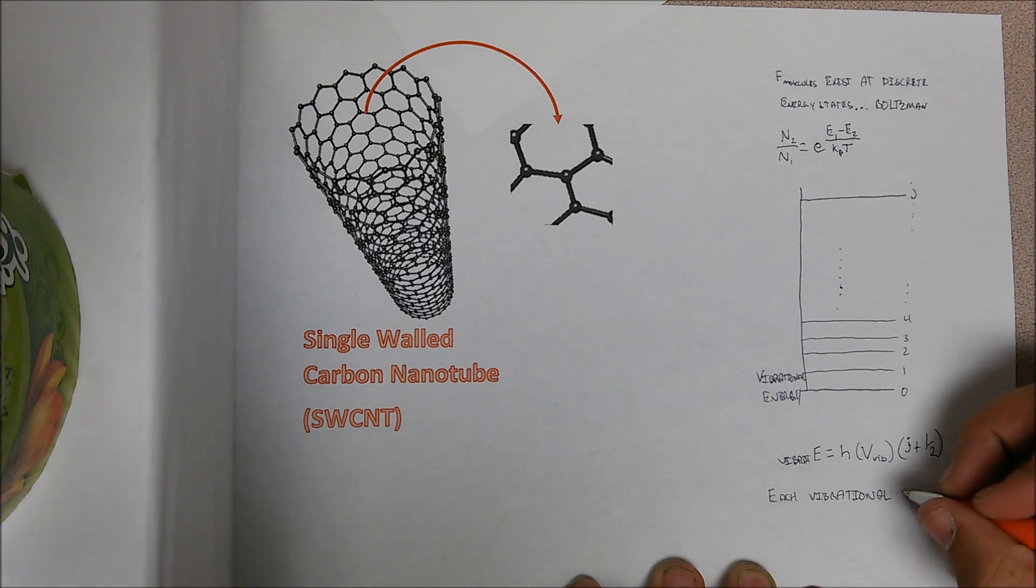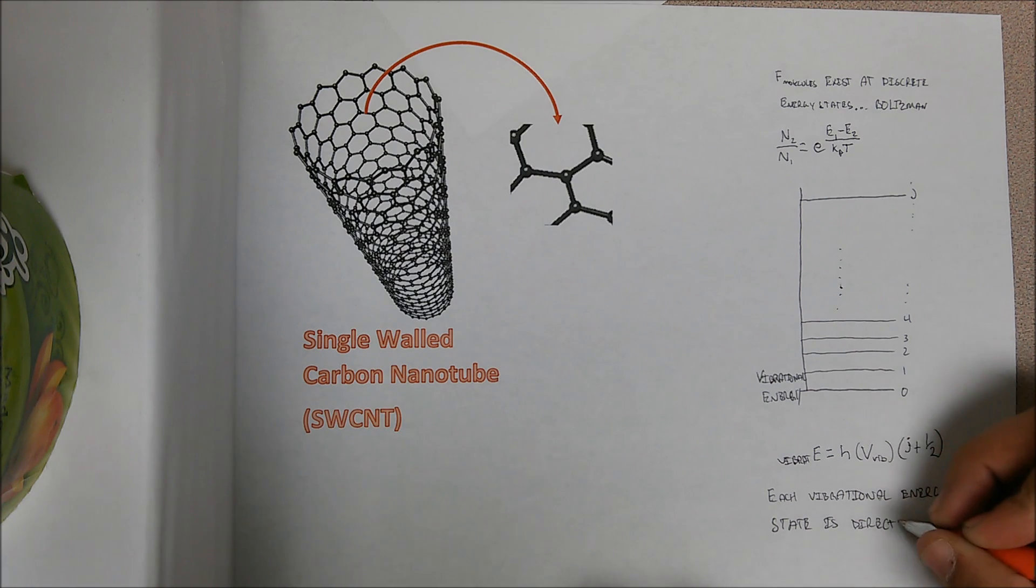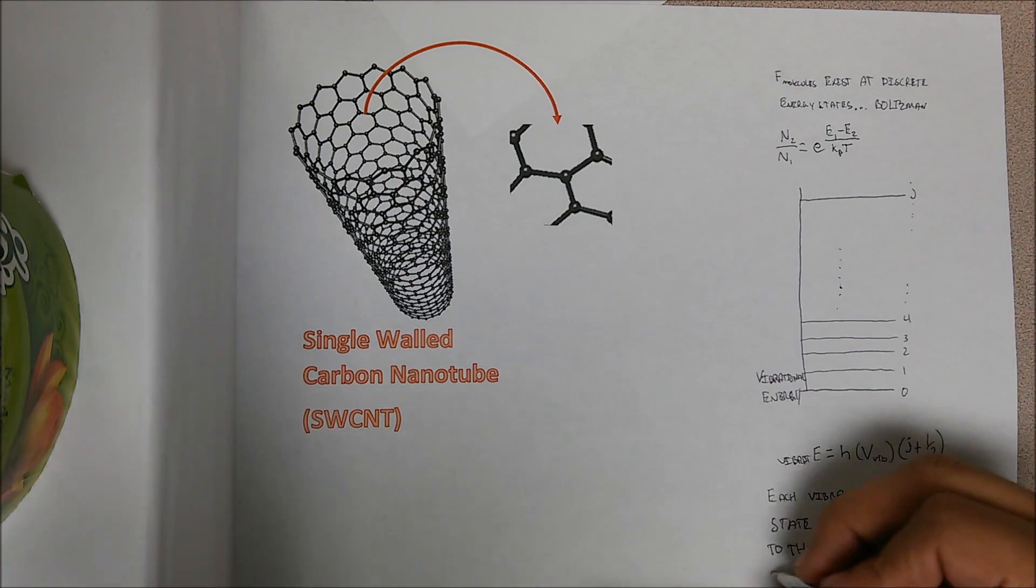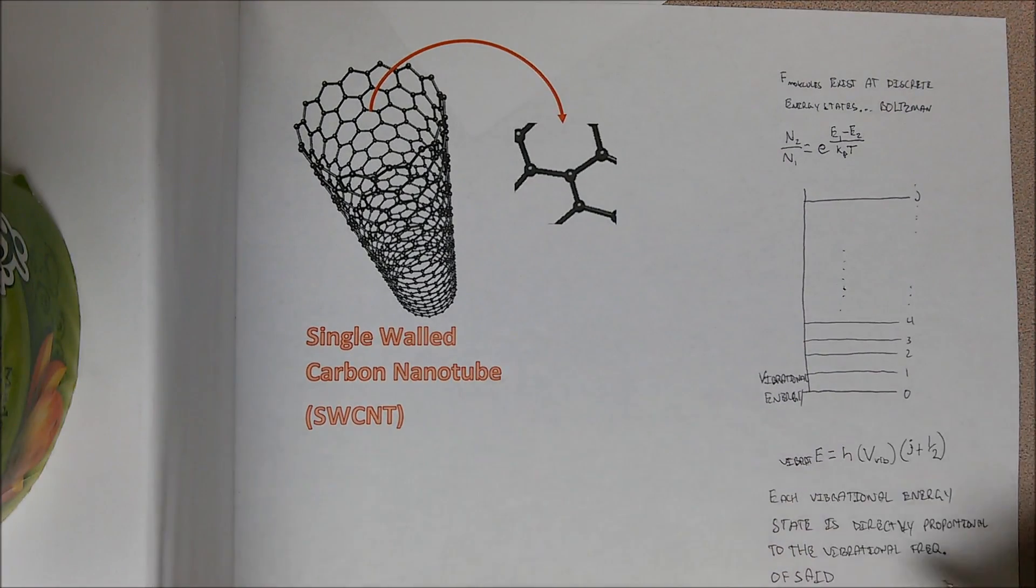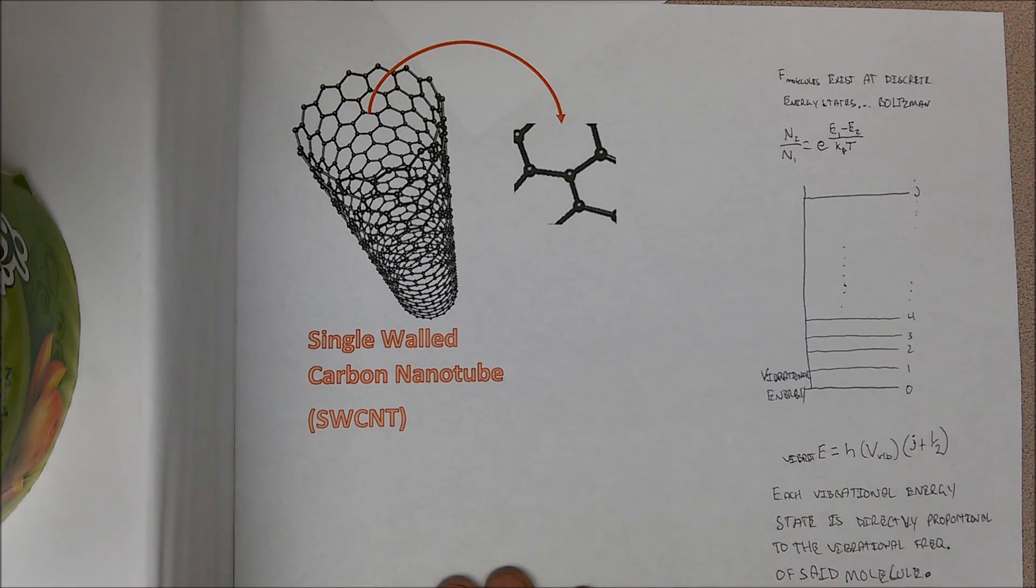The Jablonski diagram is useful for visualizing the quantum energy states that a species can exist in and also model changes of that system by defining the vibrational energy states of some molecule as Planck's constant times the frequency of vibration. Each vibrational state is directly proportional to the vibrational frequency of the species occupying that state.